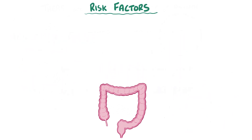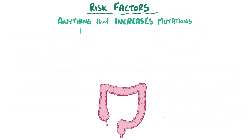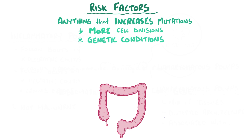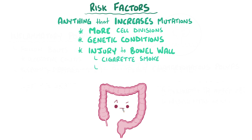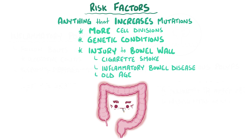Risk factors for developing polyps include anything that predisposes toward genetic mutation, which is likely to happen if there are more cell divisions. This includes genetic conditions as well as anything that injures the bowel wall, like cigarette smoke, inflammatory bowel disease, and old age itself.